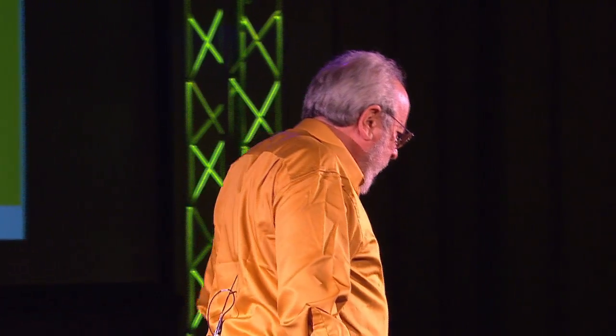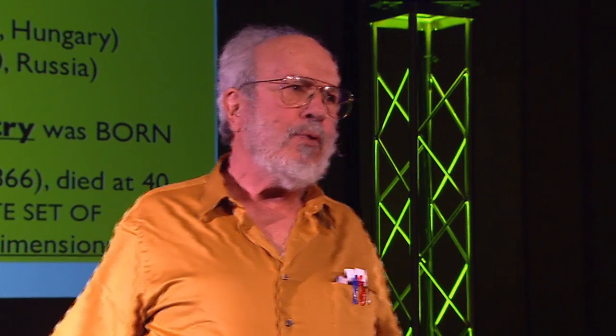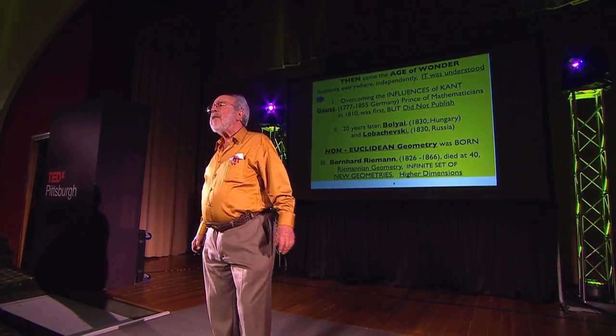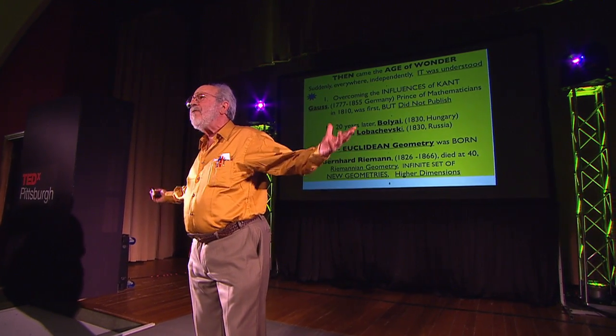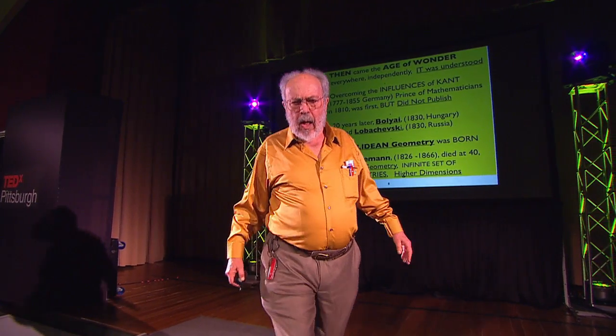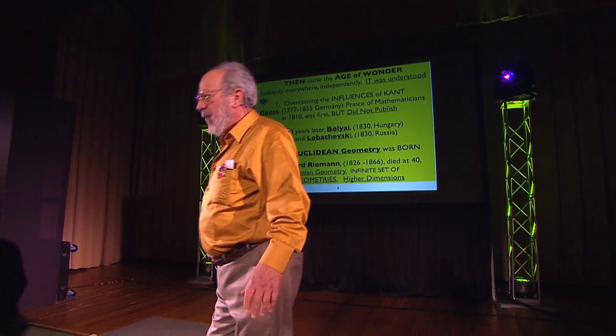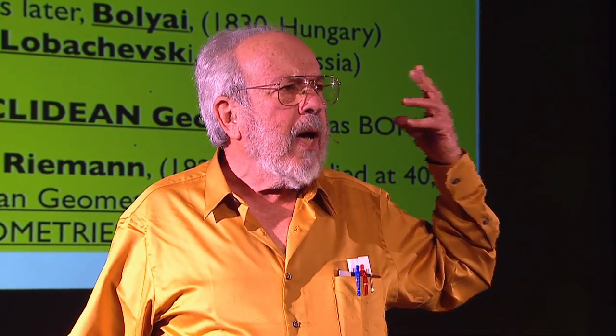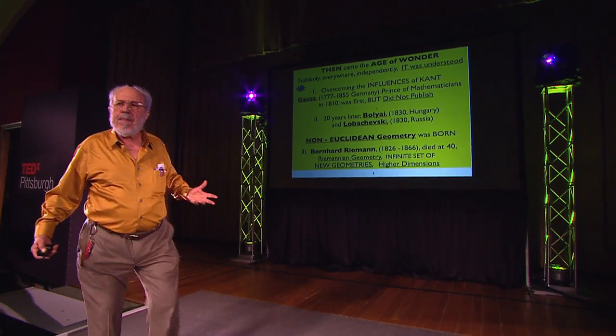Then in the 1800s, suddenly all over Europe it was understood what was going on — that the fifth postulate was an independent postulate and could not be proved from the first four. The first man to really grapple with this was the great Gauss, prince of mathematicians, probably the greatest mathematician of all time. Gauss would not publish his work on this. He told it to friends and said 'don't publish this, don't tell anybody, I don't want to get involved.' And then there was Bolyai, a Hungarian genius who never published a single thing in his lifetime because he was so upset that Gauss had beat him to the discovery of non-Euclidean geometries.